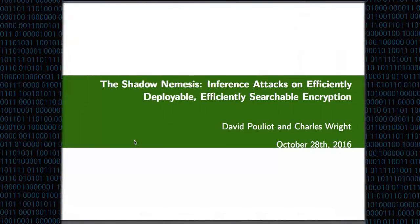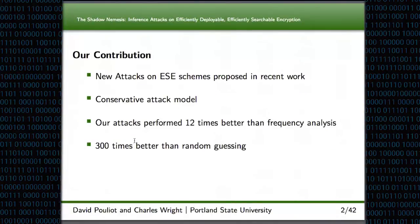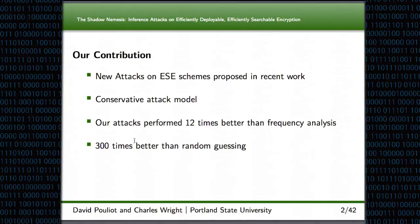Hi, my name is David Poliot and this is joint work with my advisor Charles Wright. Our contribution is we present new attacks on efficiently searchable encryption schemes that have been proposed in recent work. Our attack model is passive — we only require a copy of the ciphertext data and a little bit of auxiliary data to perform our attack. In real email experiments, our attacks perform 12 times better than frequency analysis and 300 times better than random guessing.